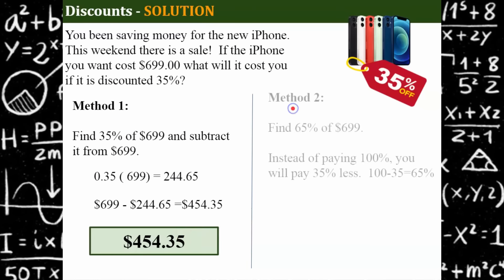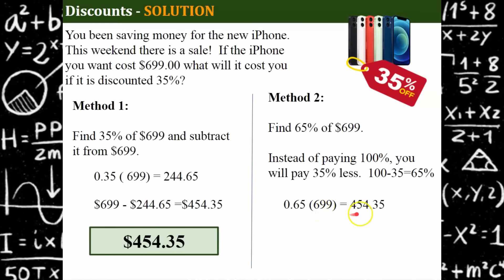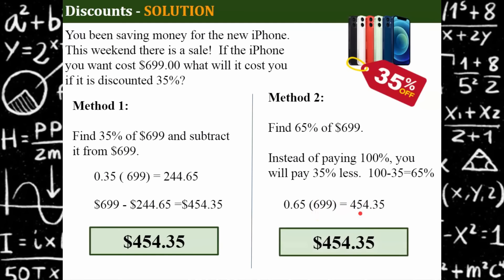Let's do method two. I'm going to find 65 percent of $699. You're probably thinking, where did that number come from? Well, 100 percent of the phone minus 35 percent means I'm going to pay 65 percent. The store is going to take away the 35 percent, but I still have to pay the 65 percent. So doing this cuts out the subtraction step. So 65 percent written as a decimal multiplied by the cost of the phone is $454.35.